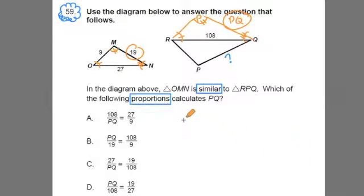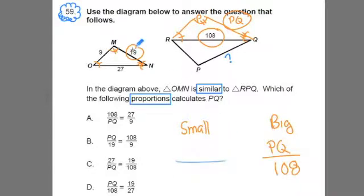What I am going to do is I am going to look at the small one here, the small triangle, and the big one, and I am going to look at the sides. I am going to look at side PQ to 108, PQ to 108, and I am going to match it up with its corresponding sides, 19 to 27. So PQ to 108 matches up with 19 to 27, and what I have just done is I have created a proportion with these two sides.